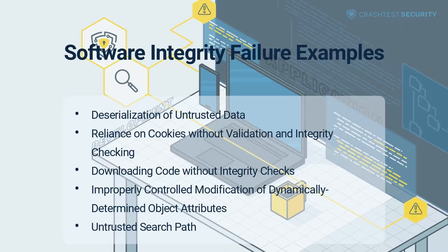Improperly controlled modification of dynamically determined object attributes. An application typically accepts input data from a component that specifies object attributes to be updated without controlling which attributes can be modified. Attackers can unexpectedly modify object attributes built for internal use with the intention of causing a system-wide seizure. Inherent language-specific vulnerabilities that aid software integrity failures include auto-binding, mass assignment in Ruby, object injection in PHP, and others.